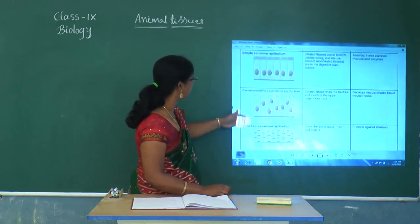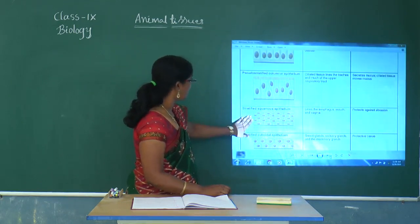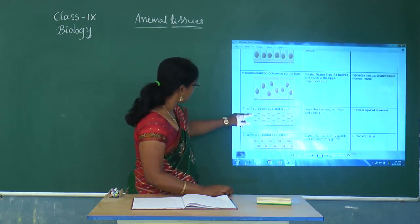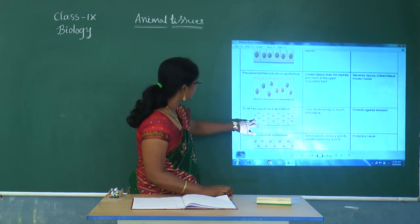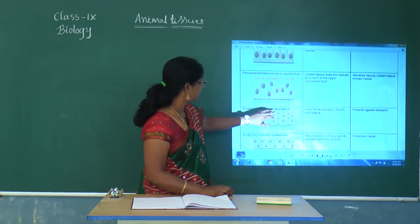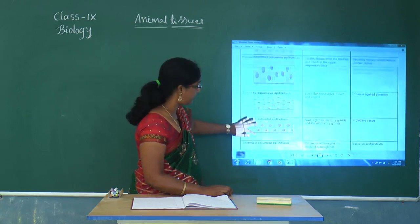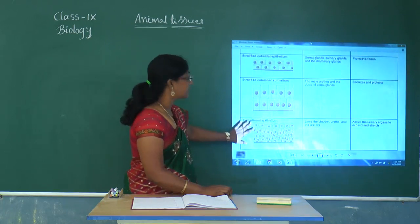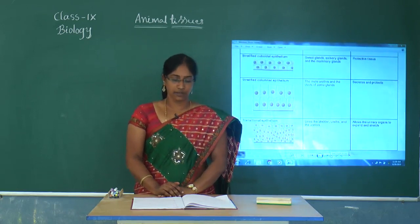Here we can find different kinds of epithelial tissues like pseudo-stratified columnar epithelium and stratified squamous epithelium. Stratified squamous epithelium cells are mostly present in the skin because they are arranged in layers — it is simple squamous epithelium arranged in the form of layers. There are also stratified cuboidal, stratified columnar, and transitional epithelium. Some epithelium helps in the formation of glands, called glandular epithelium.